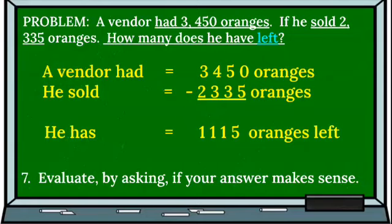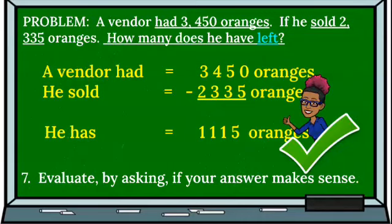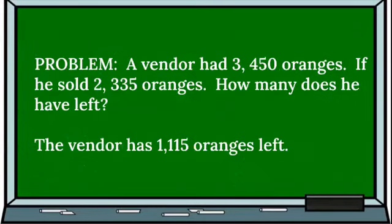Step 7: Evaluate by asking if your answer makes sense. So check it over to make sure you did your calculations and everything correctly. Makes sense, so check your calculations. So here we have our answer: the vendor has 1,115 oranges left.